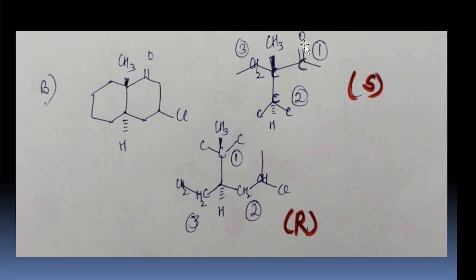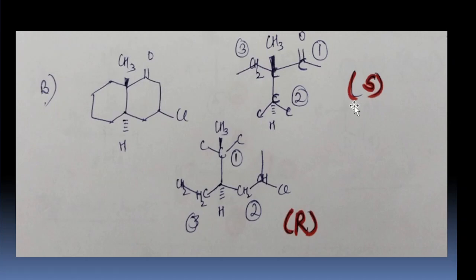The carbon with oxygen is given priority 1. The next group has 3 hydrogens, so it is given second priority. The next has 2 hydrogens — third priority. And the last has 1 hydrogen — fourth priority. The lowest priority is above the plane, so we reverse: 1, 2, 3 gives R, and therefore the answer is S.